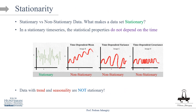For those unfamiliar with stationarity, this visualization helps. In a stationary time series, the statistical properties do not depend on time. Looking at a stationary data example, the average is roughly constant over time, the variance is constant, and the autocorrelation between any two points in time also appears constant.